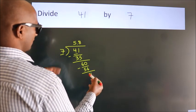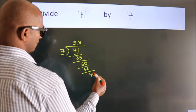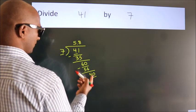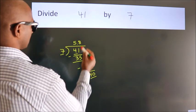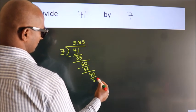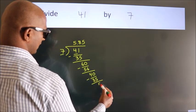After this, we already have the decimal, so directly take 0. So 40. A number close to 40 in the 7 table is 7 fives, 35. Now we subtract. We get 5.